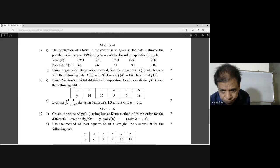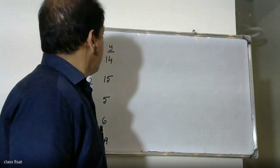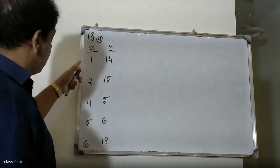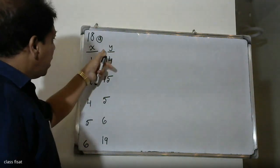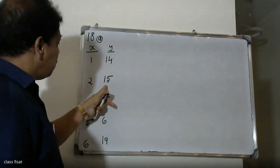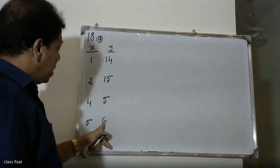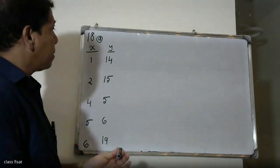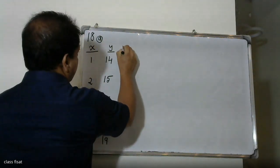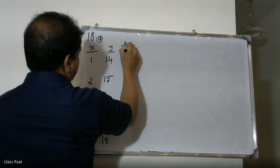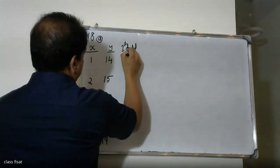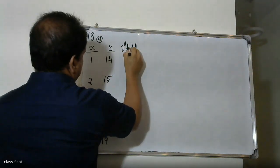Now we will set up the values. The x values are 1, 2, 4, 5, 6, and the y values are 14, 15, 6, 9. This is the first column. We now compute the first divided difference.